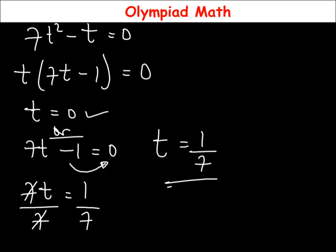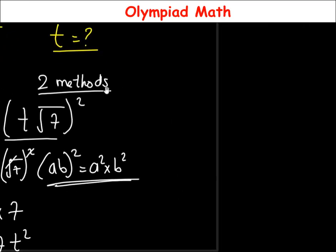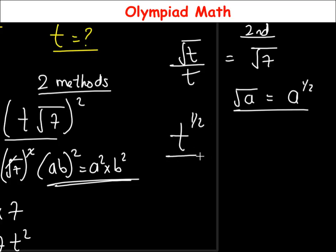So the second method: the equation is √t over t equals √7. We bring in the principle that √a equals a raised to the power of one-half. Applying this, √t becomes t raised to the power of one-half, so the equation becomes t^(1/2) over t equals √7.